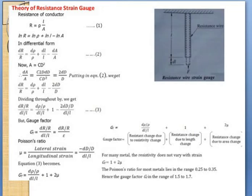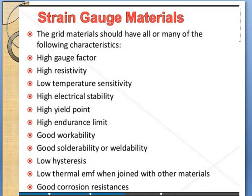This completes the theory of the resistance strain gauge. Now we look at the strain gauge material properties. The grid material should have all or many of the following characteristics. Backup materials can be of different types.